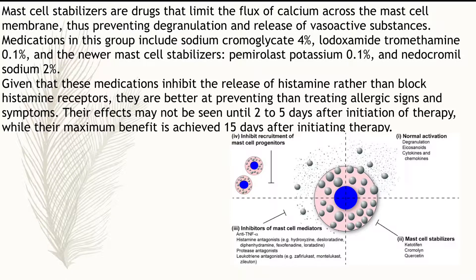Medications in this group include sodium chromoglycate 4%, 0.1% lodoxamide tromethamine, and the newer mast cell stabilizers: pemirolast potassium 0.1% and nedocromil sodium 2%. Given that these medications inhibit the release of histamine rather than block histamine receptors, they are better at preventing than treating allergic signs and symptoms.